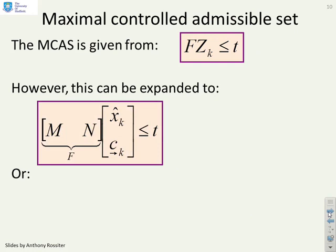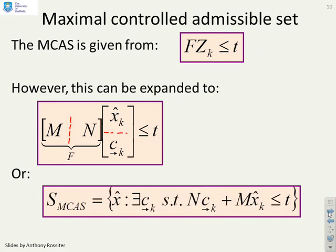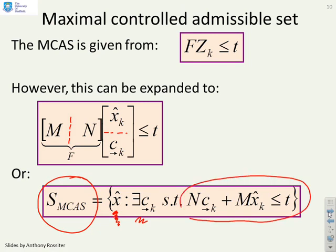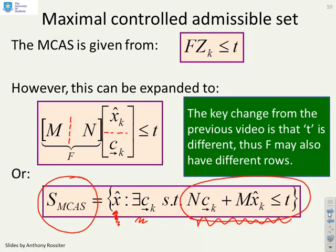The MCAS is given by this form, but we said it's convenient to unpack this a bit, that is to separate the bit that multiplies x_hat and the bit that multiplies c. Then I can define formally my set within which a deviation variable x_hat is basically feasible, meaning there exists a c such that I can satisfy these inequalities. These constraints are the ones that you will put into the QP in your OMPC or SOMPC algorithm. You'll notice the only real change from the previous video is that the t is essentially going to be different because the t had the steady states embedded in it.